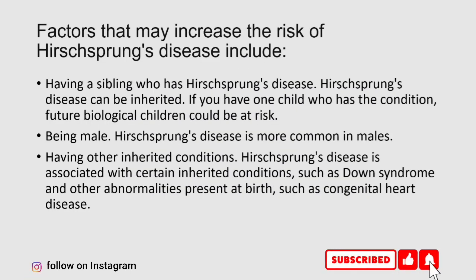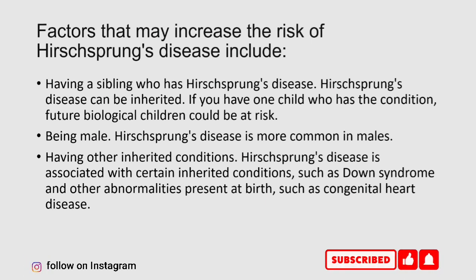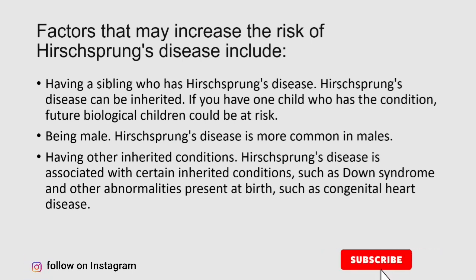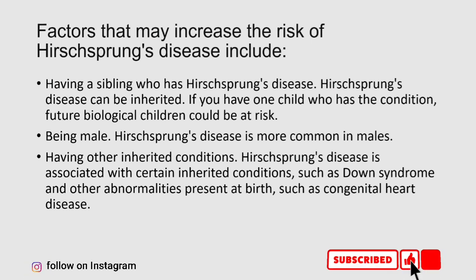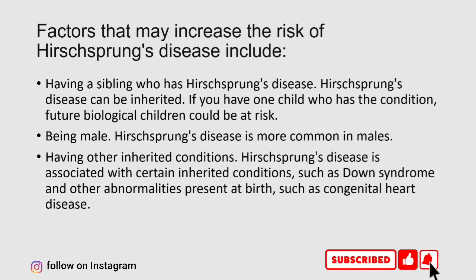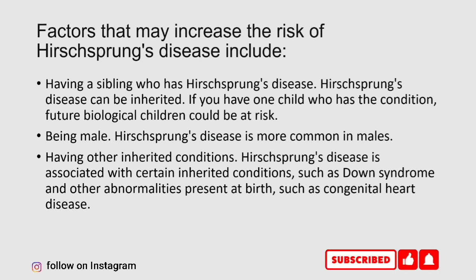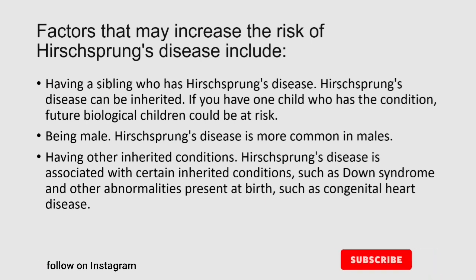Factors that may increase the risk of Hirschsprung's disease include having a sibling who has Hirschsprung's disease, as the condition can be inherited — if you have one child with the condition, future biological children could be at risk. Being male, as Hirschsprung's disease is more common in males. Having other inherited conditions, such as Down syndrome and other abnormalities present at birth, such as congenital heart disease.